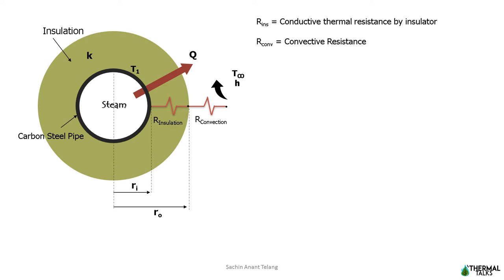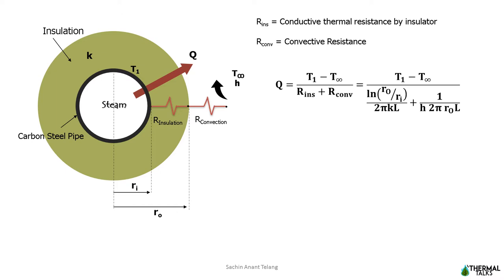Let us investigate the variation of conductive thermal resistance within the insulator and convective resistance at the outer surface of the insulator that is offered to the heat flow. We can write the heat transfer equation from insulator to ambient air as Q equals T1 minus T-infinity divided by insulation resistance plus convection resistance.